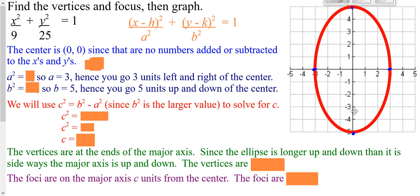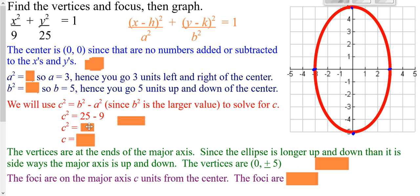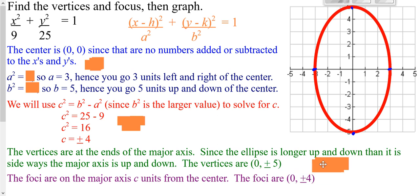We know the major axis is the longer axis, so since we went up and down 5, our vertices are (0, 5) and (0, −5). Your foci are going to be on that major axis, c units from your center. So we go b squared minus a squared — it's always the bigger minus the smaller — so that's 25 minus 9, which is 16. Solving for c, we get plus or minus 4. So our foci are 4 units up and down: (0, 4) and (0, −4).